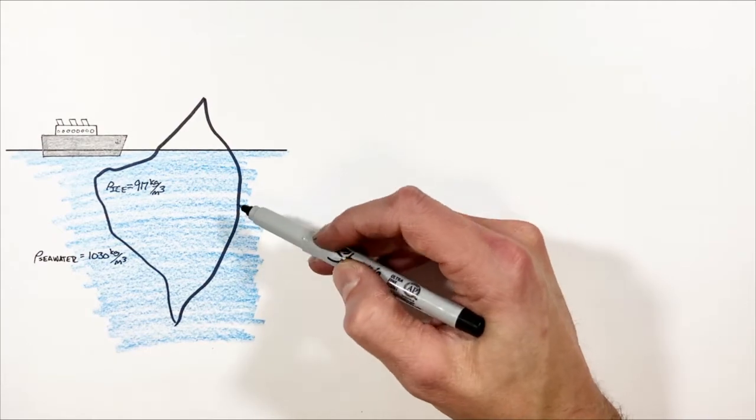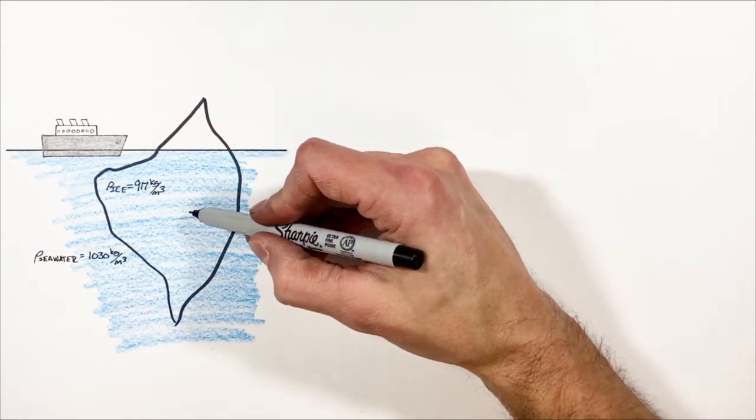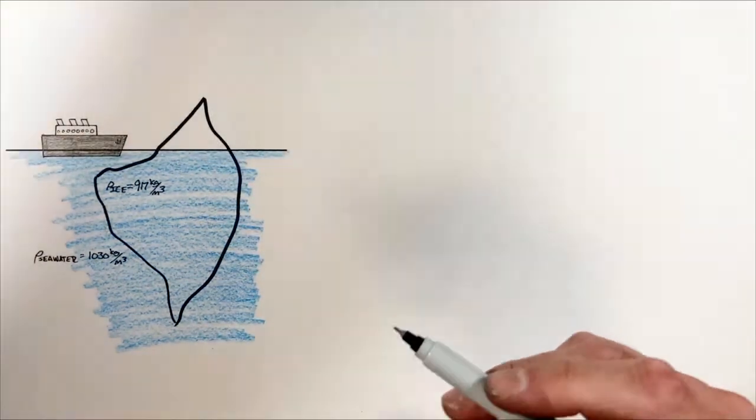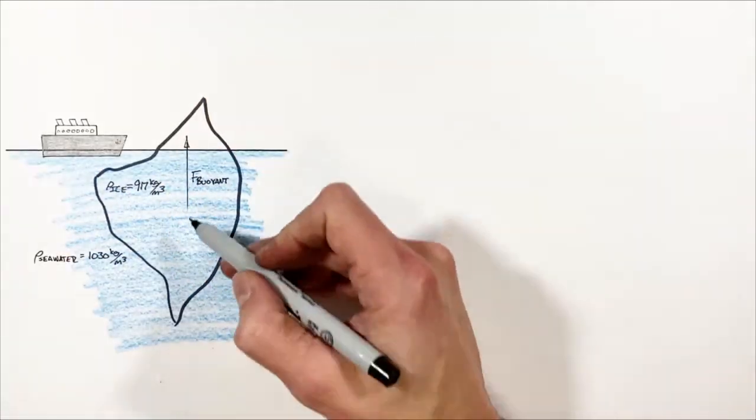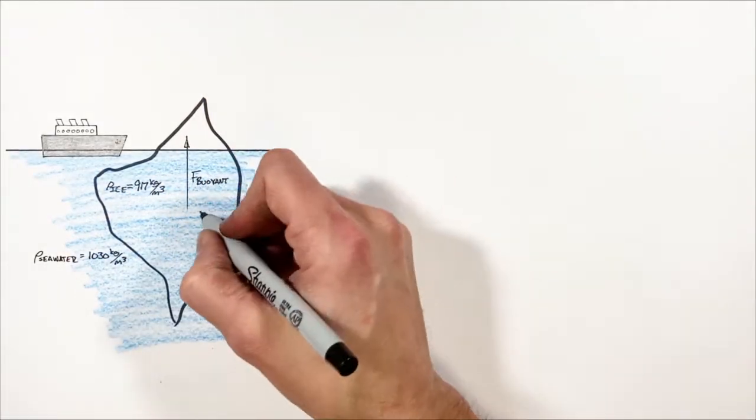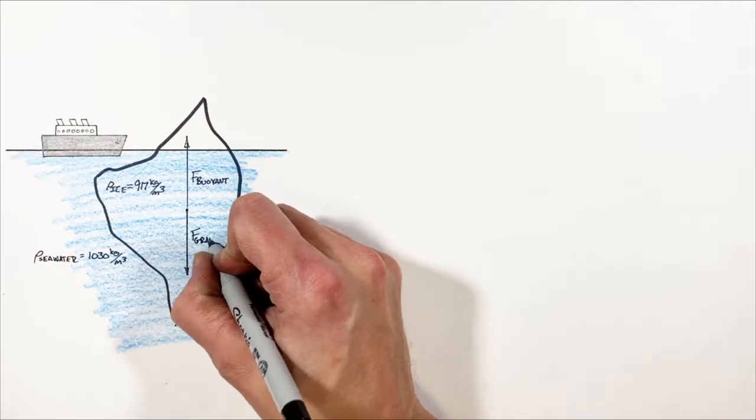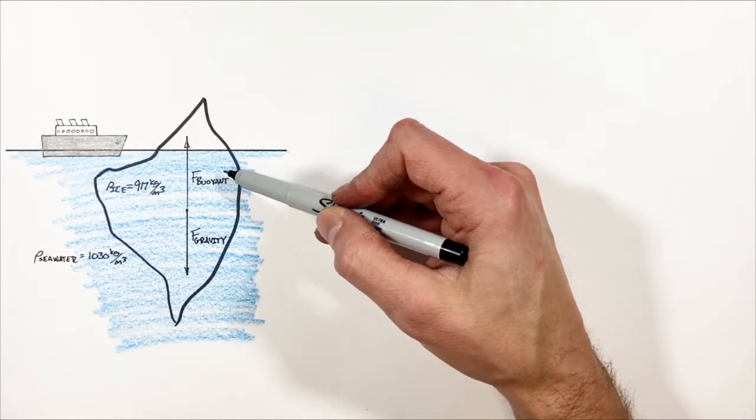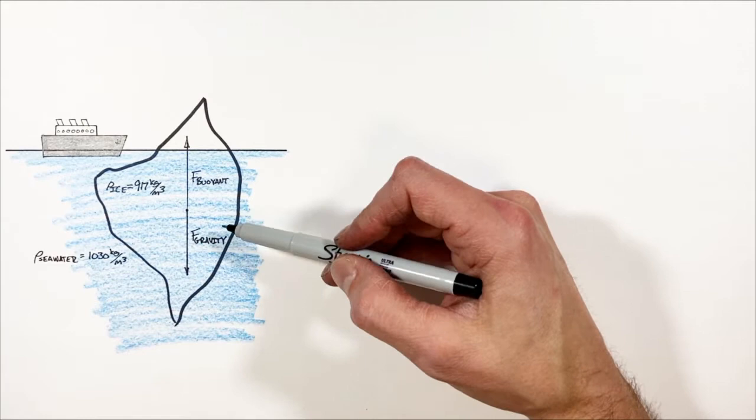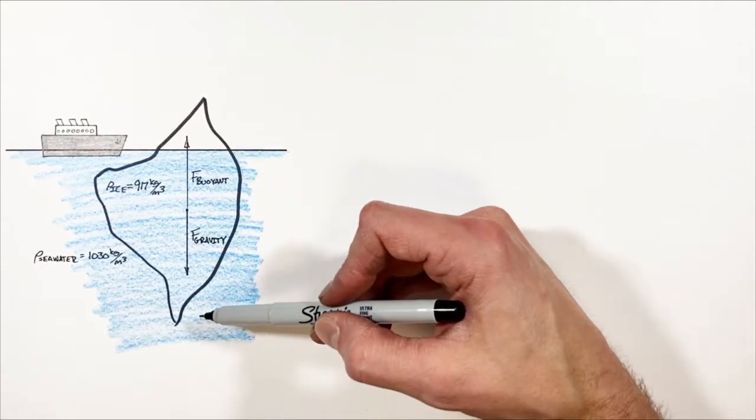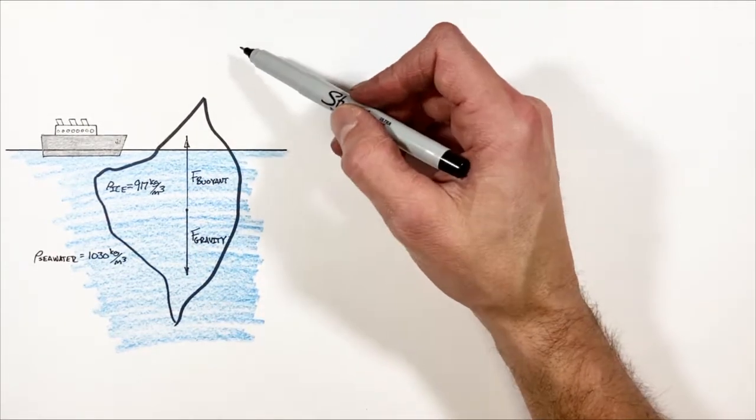When an iceberg is just floating in the water, there's an equilibrium between the buoyant force acting up on the iceberg and the force by gravity acting down on the iceberg. And we can prove that because if the buoyant force upward was not equal to the force by gravity, this iceberg would either sink deeper into the ocean or take off like a rocket.